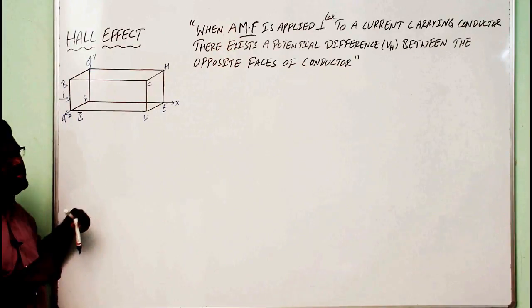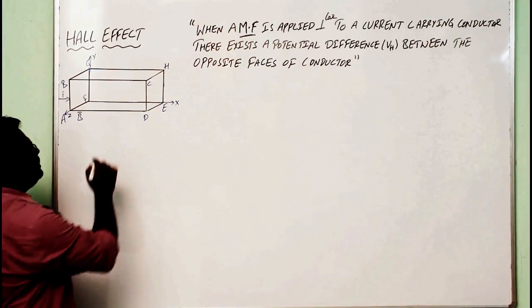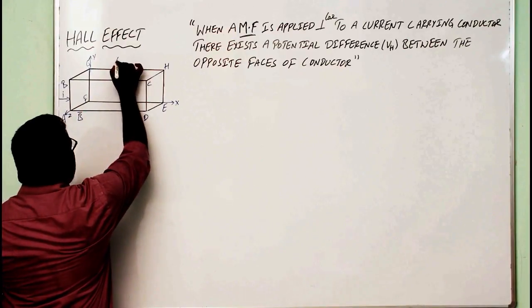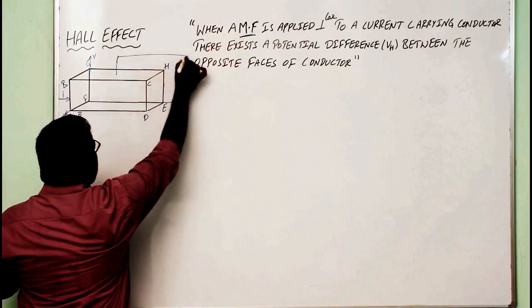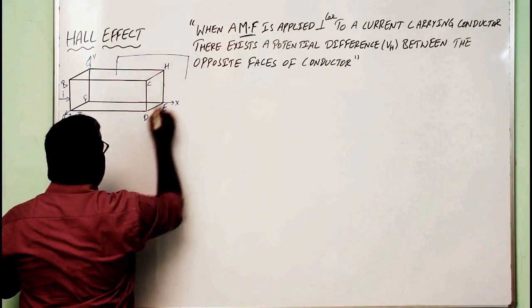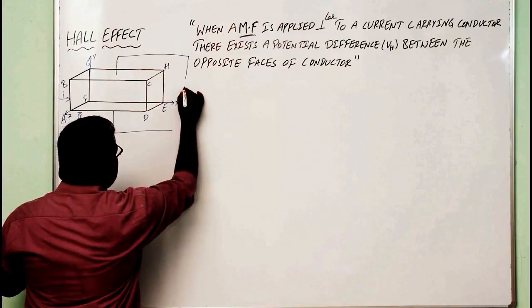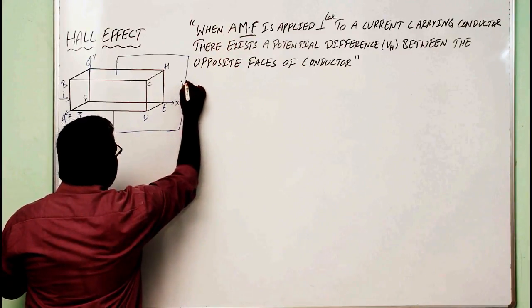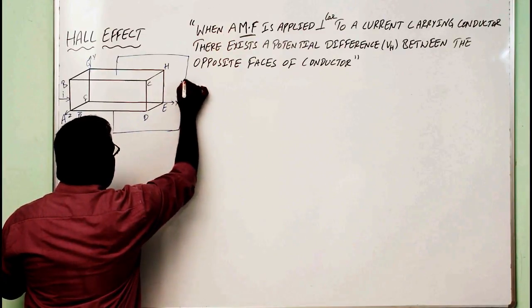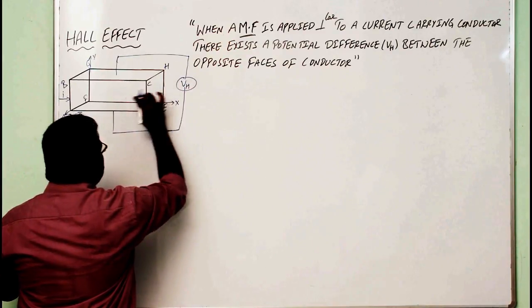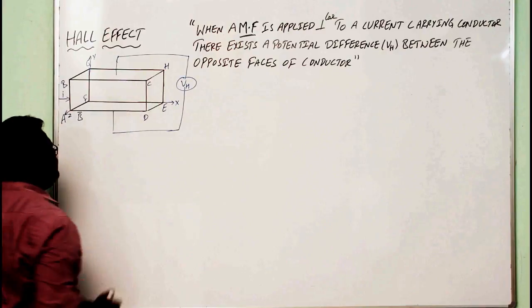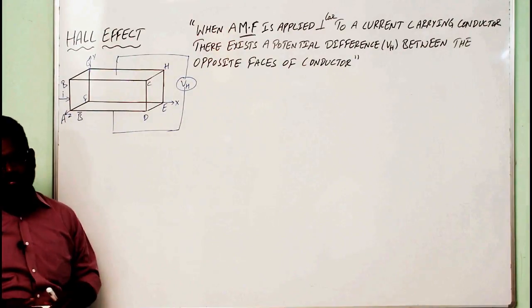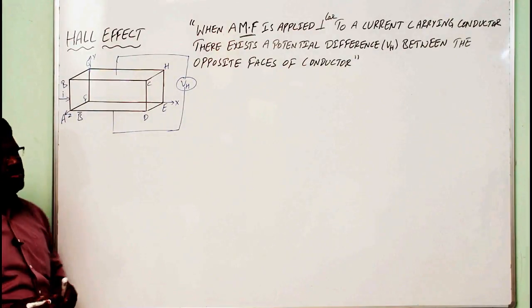Between the two opposite ends, there is a development of potential difference called V_H — the Hall voltage. The electric field between the two ends is the Hall electric field.